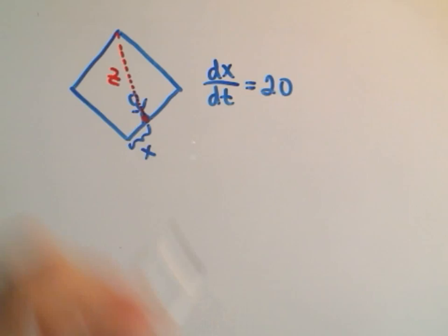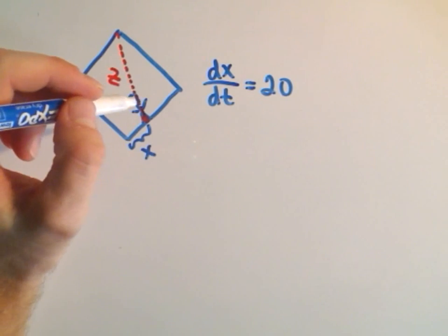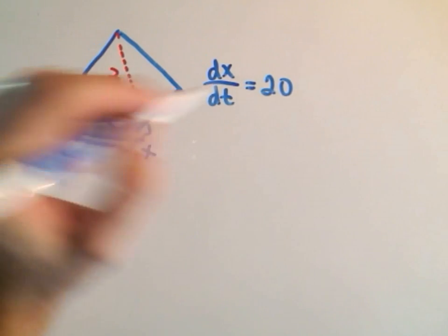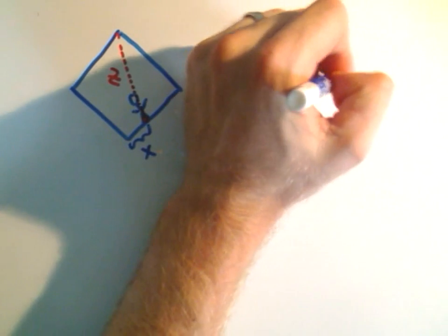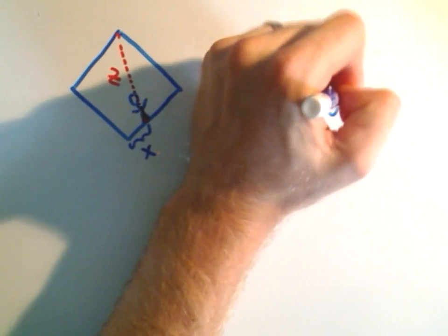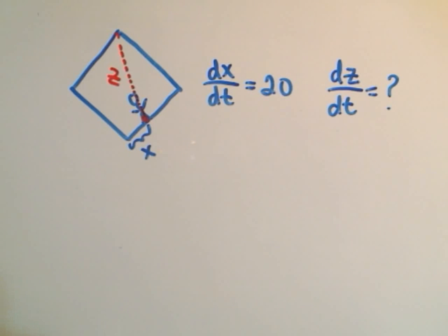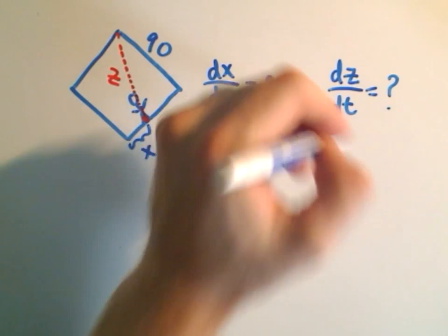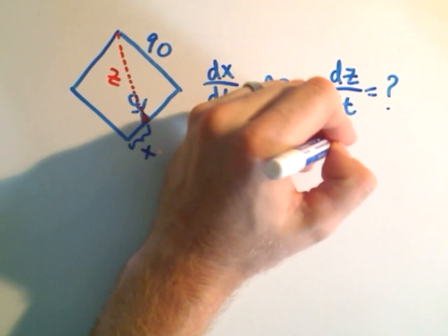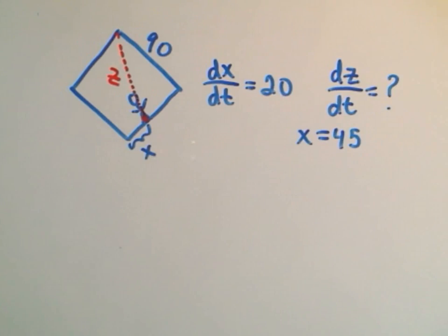We're trying to figure out the rate at which his distance from second base is decreasing. So we're trying to figure out the change in Z with respect to time. And we're trying to do that in this problem when he's halfway to first base. Well, if each side is 90 feet long, when he's halfway to first base, we'll be doing that when X equals 45.